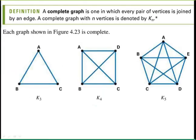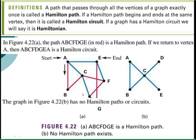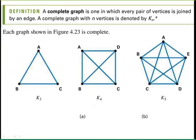A complete graph is one in which every pair of vertices is joined by an edge. A complete graph with n vertices is denoted by K_n. This would not be a complete graph because these aren't all connected, but these are shapes where all vertices are connected to each other.